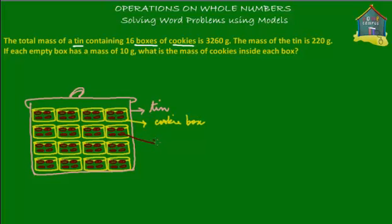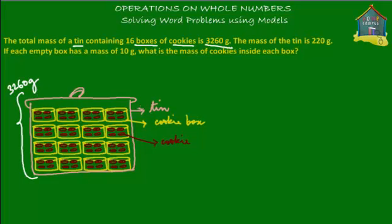The brown ones are the cookies — those are the cookies. There are 16 cookie boxes, there are cookies inside each of those 16 boxes, and all 16 cookie boxes are inside the tin. The entire thing — the whole tin with cookies and cookie boxes — has a mass of 3260 grams.